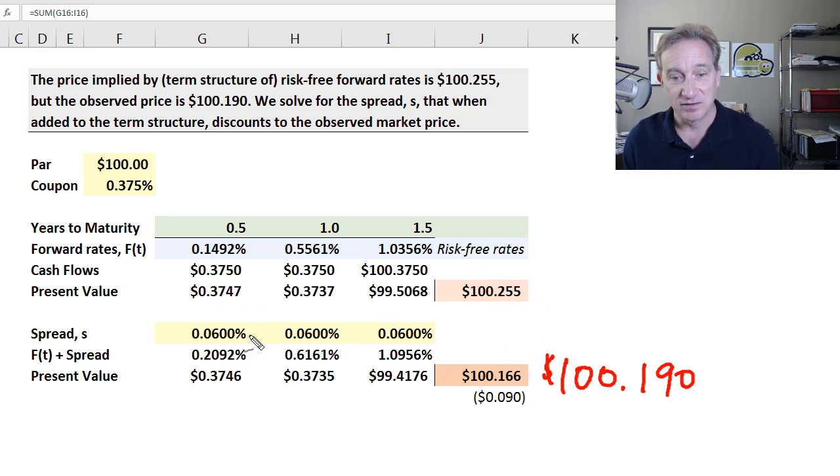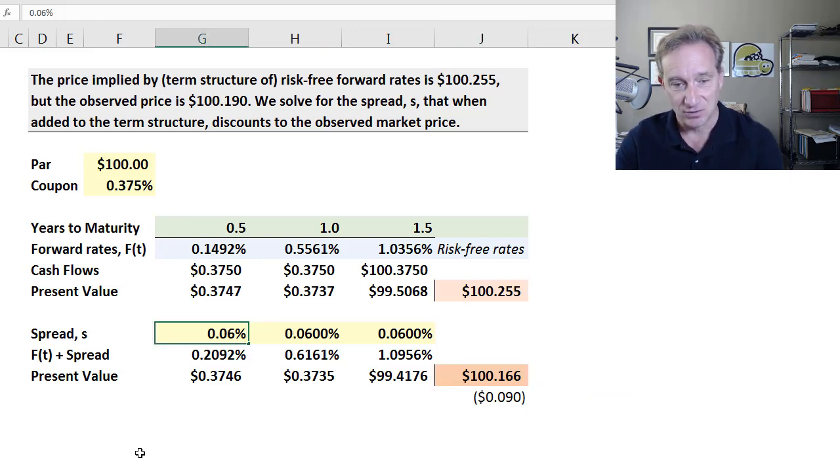And now we don't change our assumption about the term structure. Rather, we go and solve for the spread that when we discount these cash flows, gives us a model price that matches the observed market price, right? So we observe $100.19. I've got a spread in there of 0.06%. It's not quite right. And I would just have to iterate, right? I put in 0.03%. That's not quite right. And I know because I had this in when we started that it's 4.4 basis points is the correct spread. That's in Tuckman's chapter. So if I put that spread and you can see it's iterative, then I get, I add that to the forward rate.